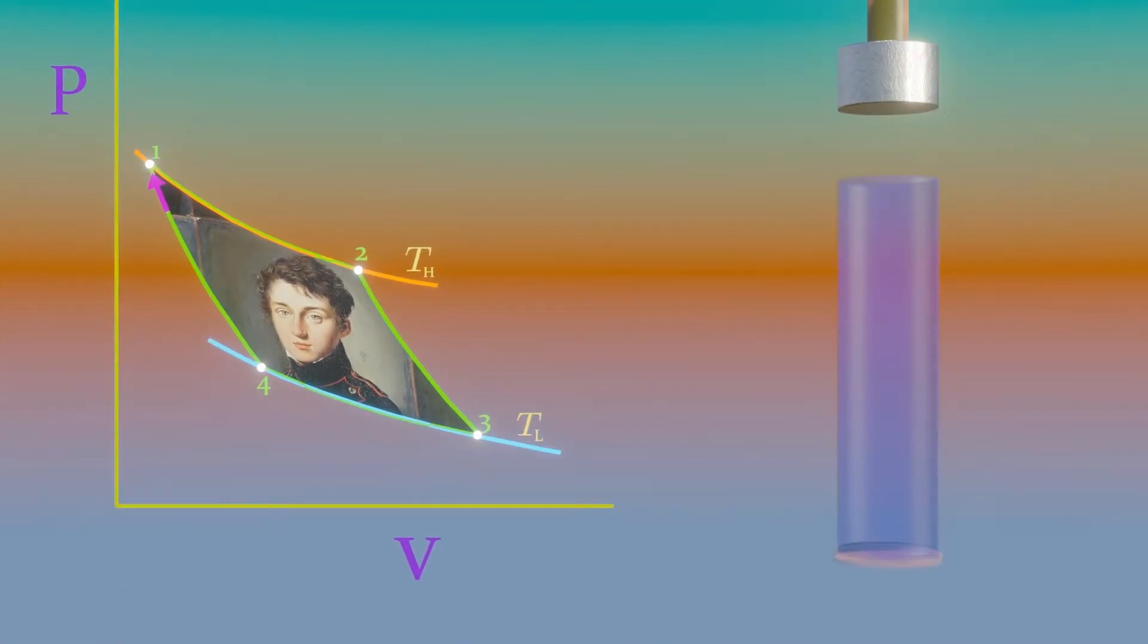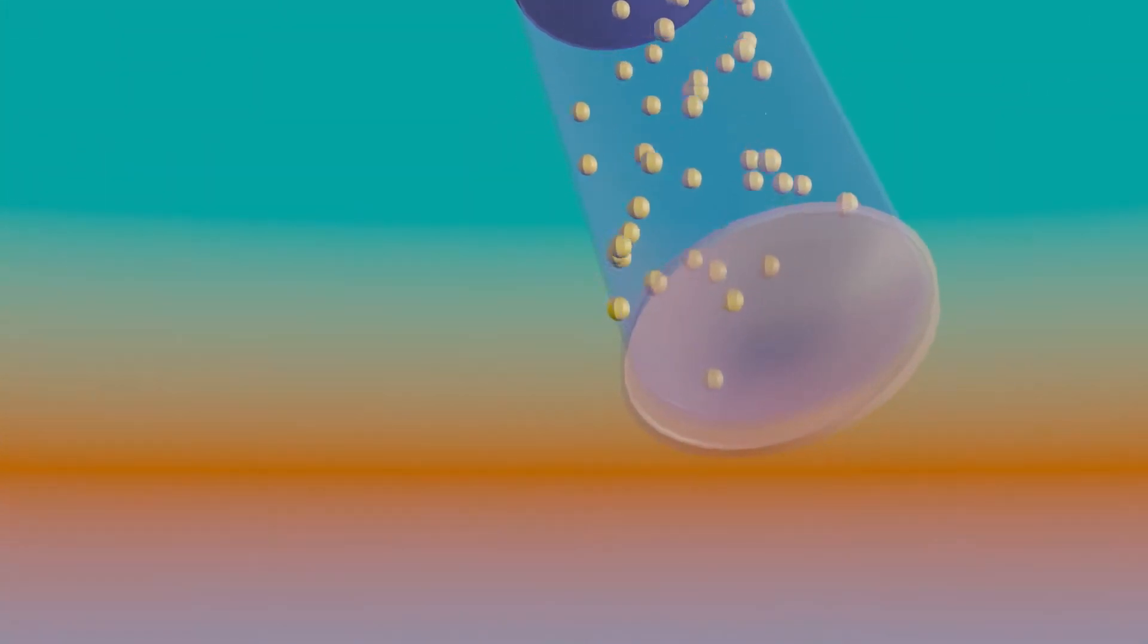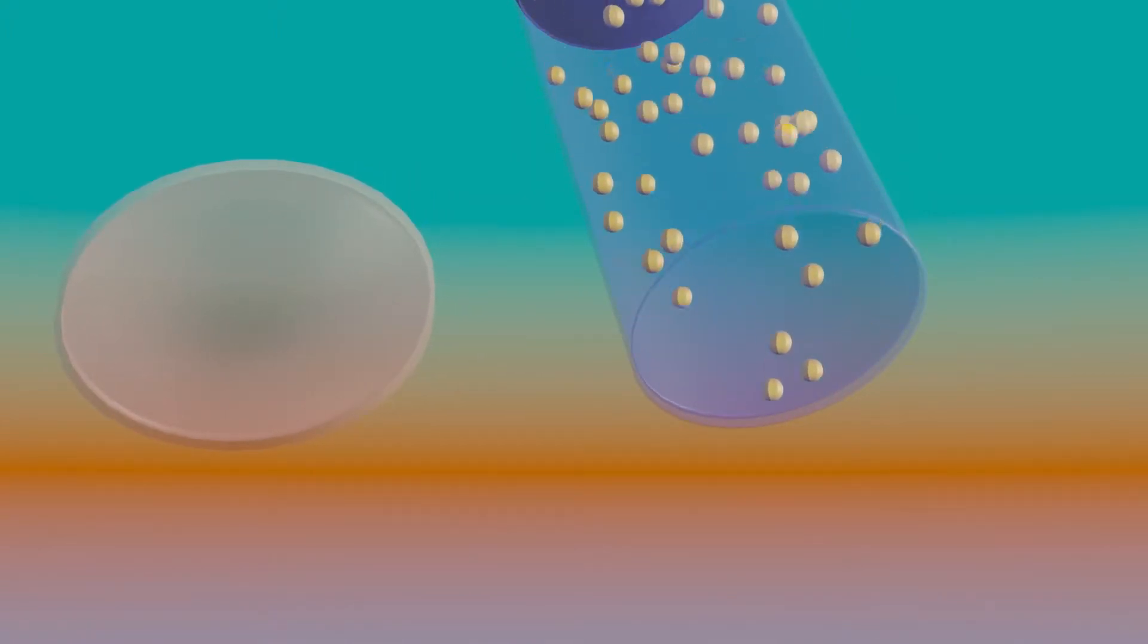Consider a closed system that consists of a gas contained in an adiabatic piston cylinder device. The insulation of the cylinder head is such that it may be removed to bring the cylinder into contact with reservoirs to provide heat transfer.